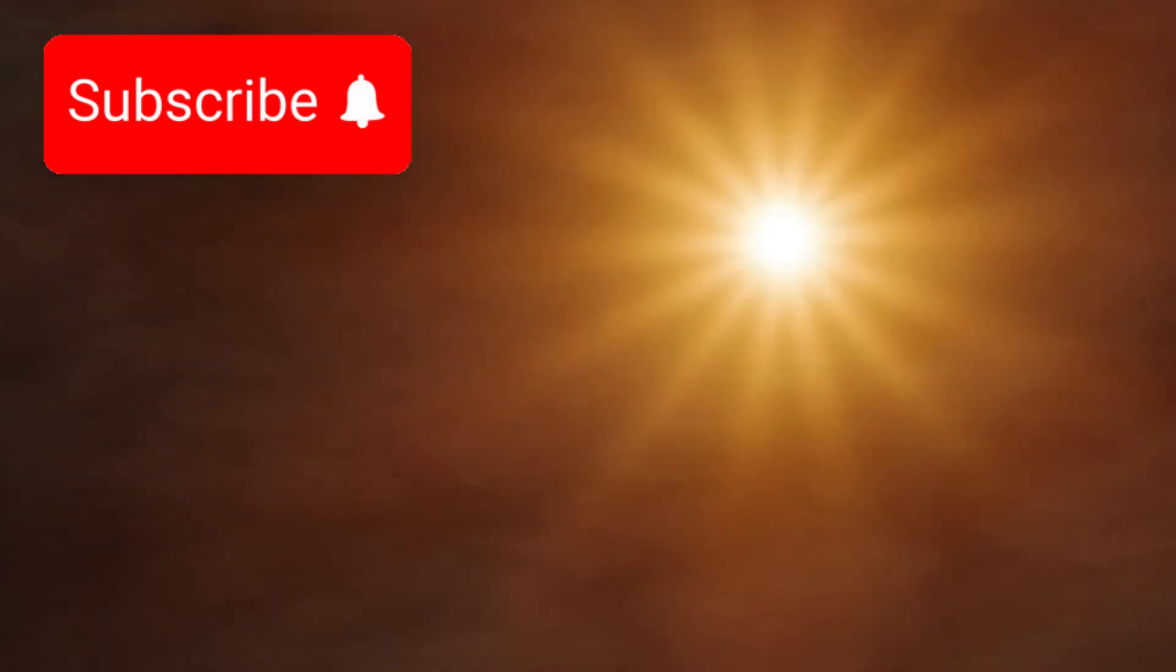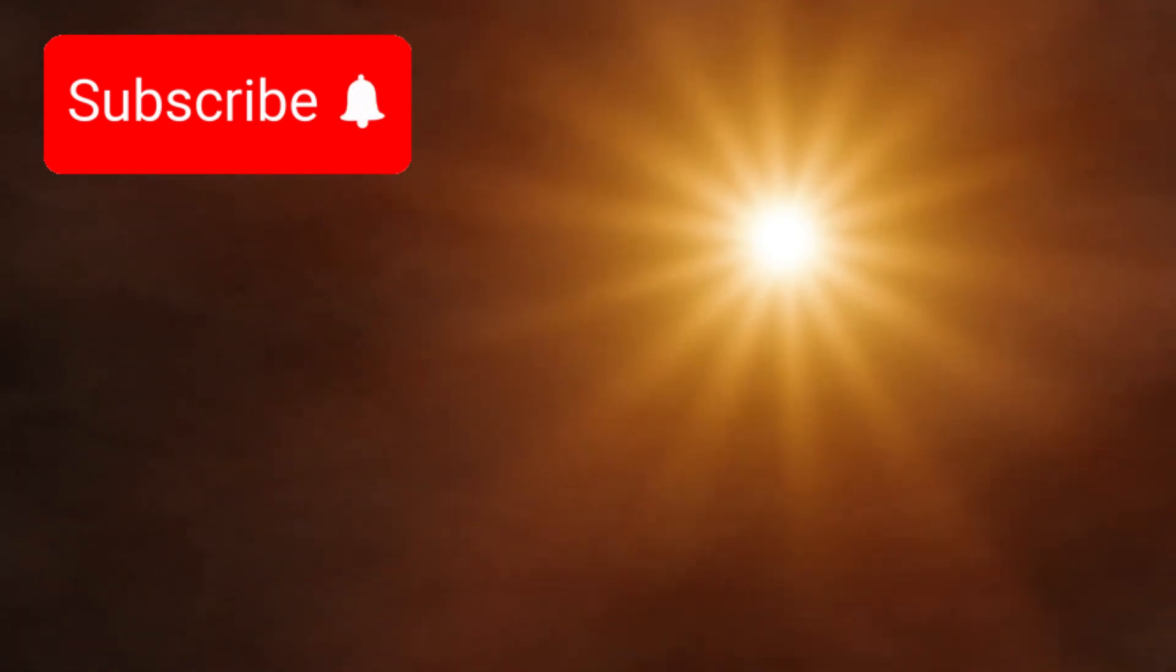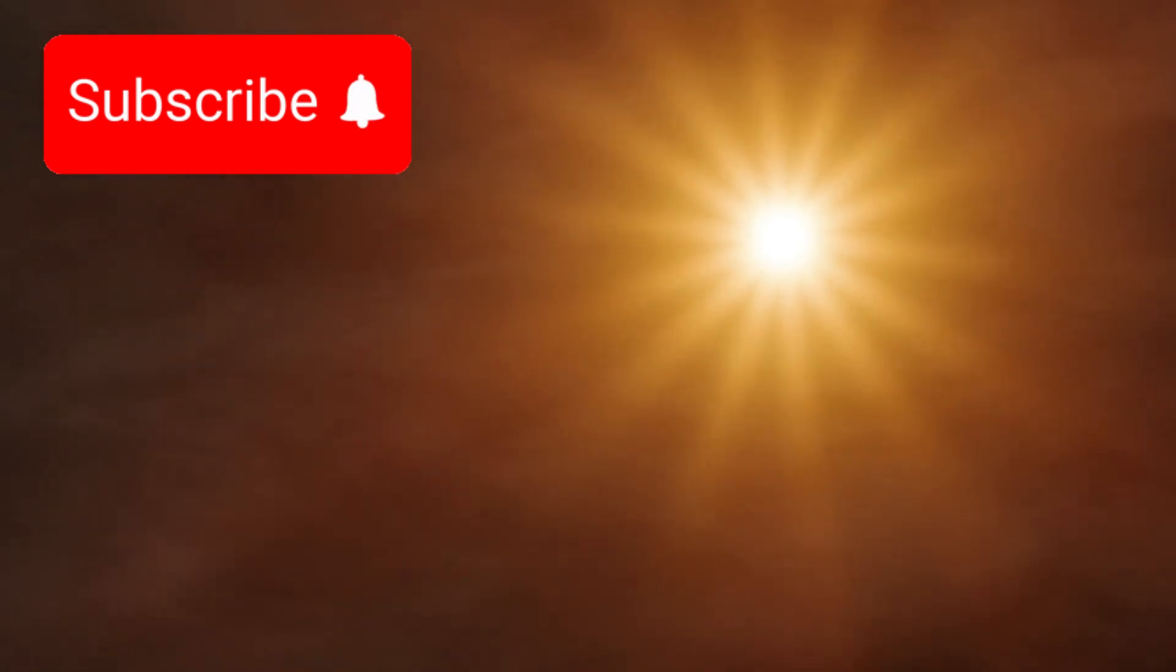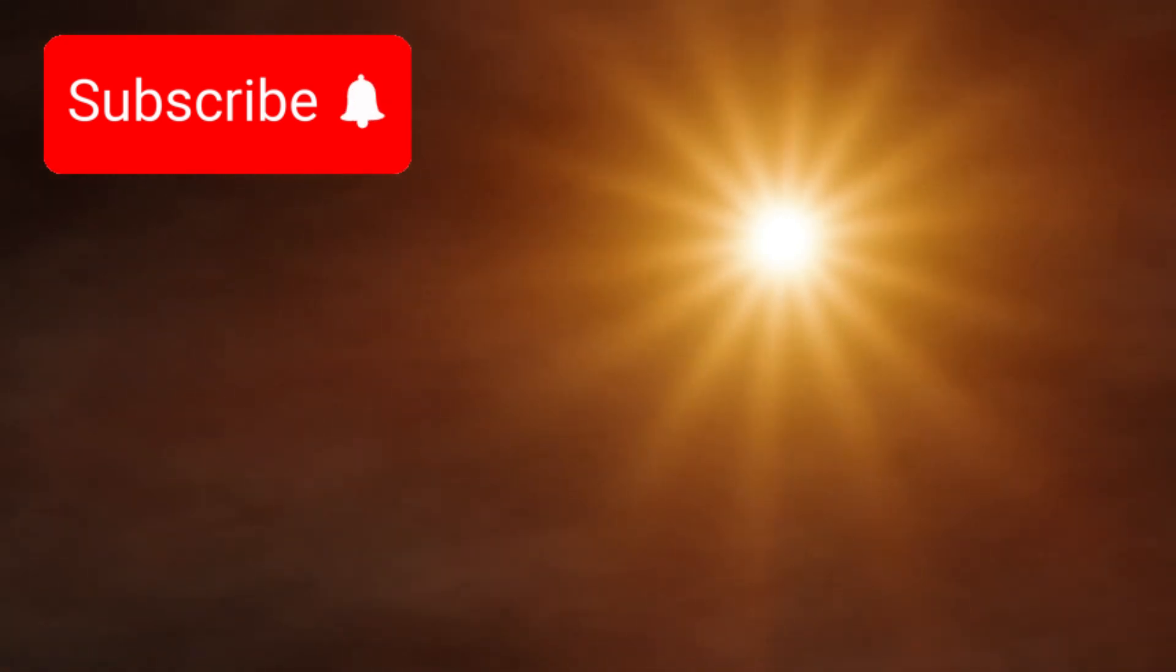These Hycian planets can be up to 10 times the mass of Earth and may possess atmospheric pressures and temperatures that, while extreme by human standards, still allow for the presence of liquid water, a key ingredient for life as we know it. Temperatures on these worlds might reach 200 degrees Celsius, but the thick hydrogen atmospheres could trap heat in a way that maintains stable conditions deep beneath the clouds, especially in oceans shielded from harmful radiation.